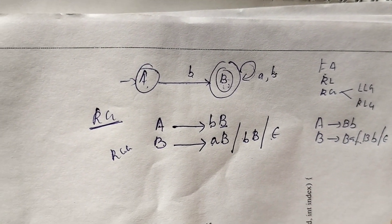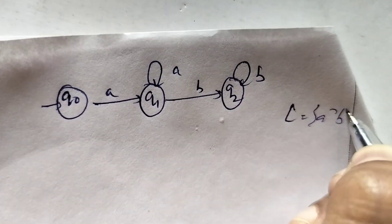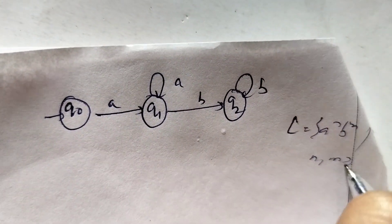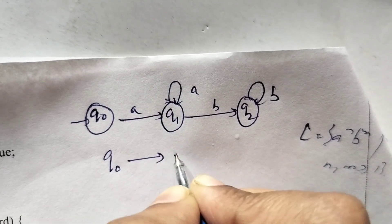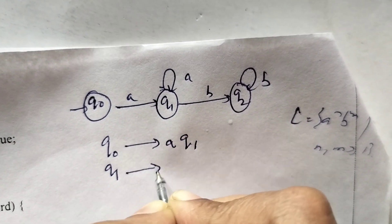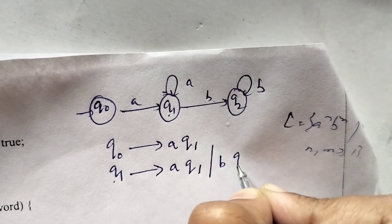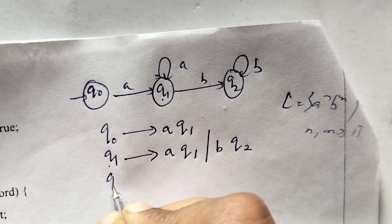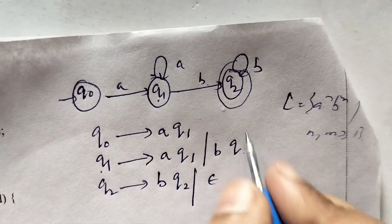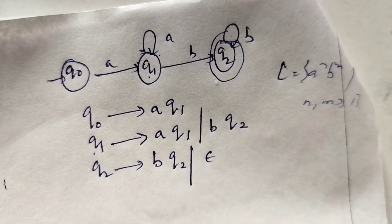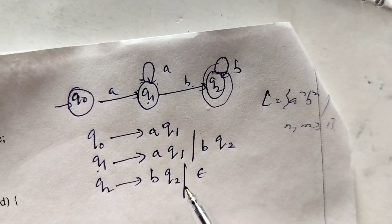One more example: consider an automata for the language a^n b^m where n, m ≥ 1. The grammar is: Q0 → aQ1 (from Q0, seeing 'a', go to Q1), Q1 → aQ1 (self-loop on 'a'), Q1 → bQ2 (seeing 'b', go to Q2), Q2 → bQ2 (self-loop on 'b'), and Q2 → ε since Q2 is the accepting state. This is a right linear regular grammar. In the next video, context free grammar will be explained.